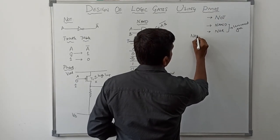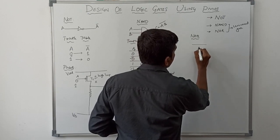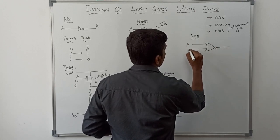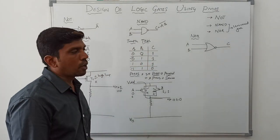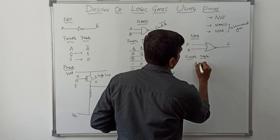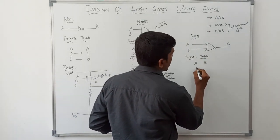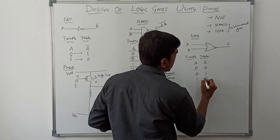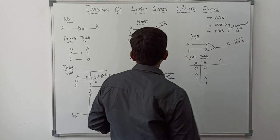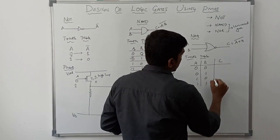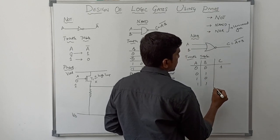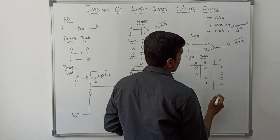Now I am going to design the last gate — NOR gate. Let me draw the symbol. Inputs are A and B, and C is the output. The Boolean expression for NOR gate is (A plus B) bar. With two variables there are four combinations of input. Using this expression: 0 plus 0 gives actual result 0, and taking one's complement gives result 1. The remaining outputs are 0, 0, 0. That is the truth table of NOR gate.